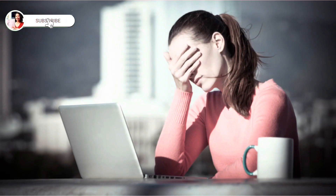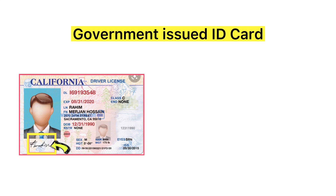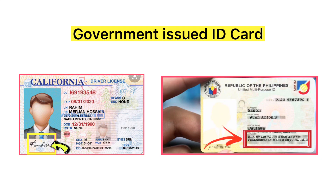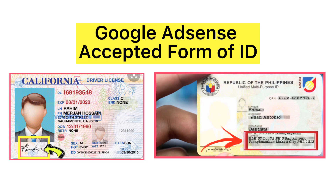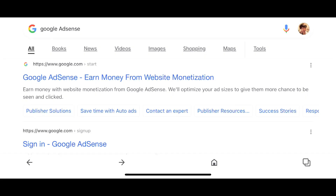Here are my tips based on my experience: if you do not have any government IDs that have your address and signature on them, and you don't want to hassle through multiple attempts, all you need to do is use your parent's, spouse's, or relative's ID card with their address and signature on it — because that is exactly what Google AdSense is asking you to submit.